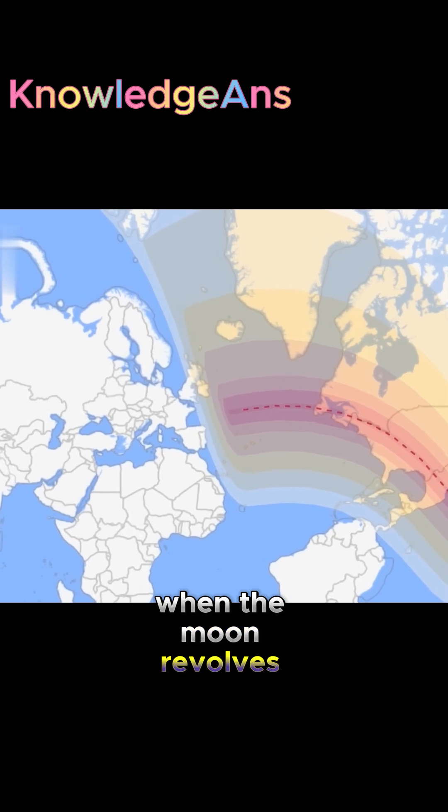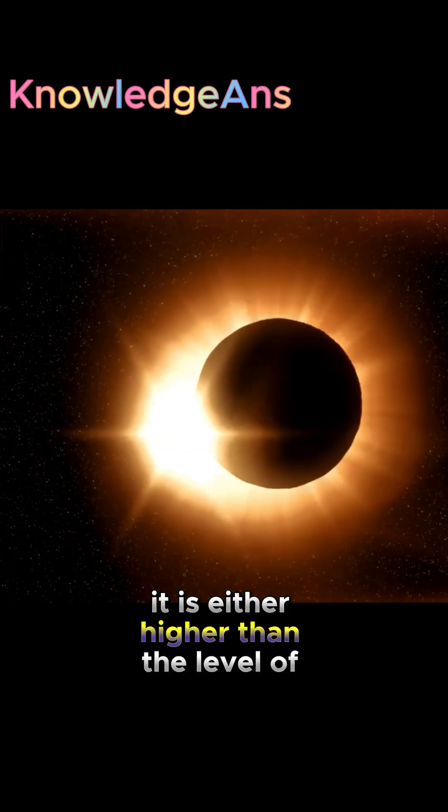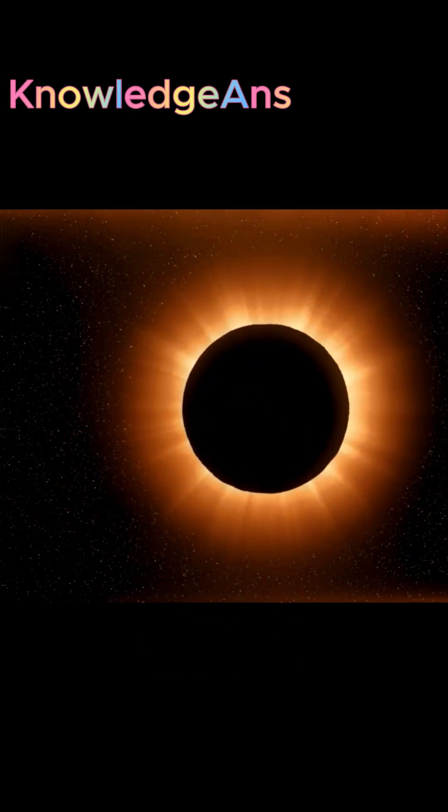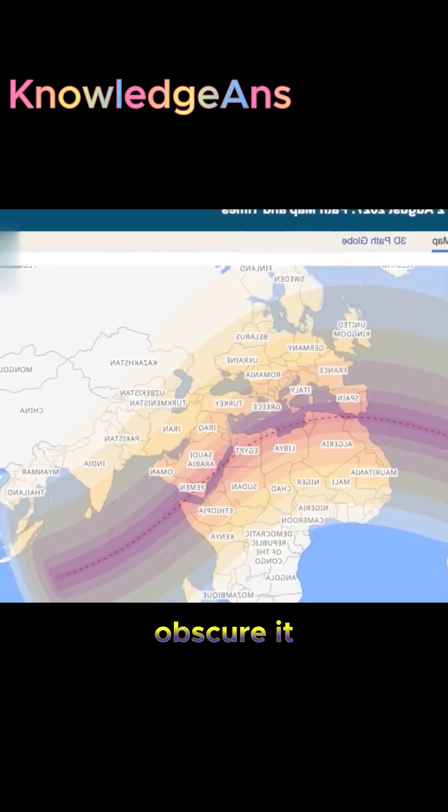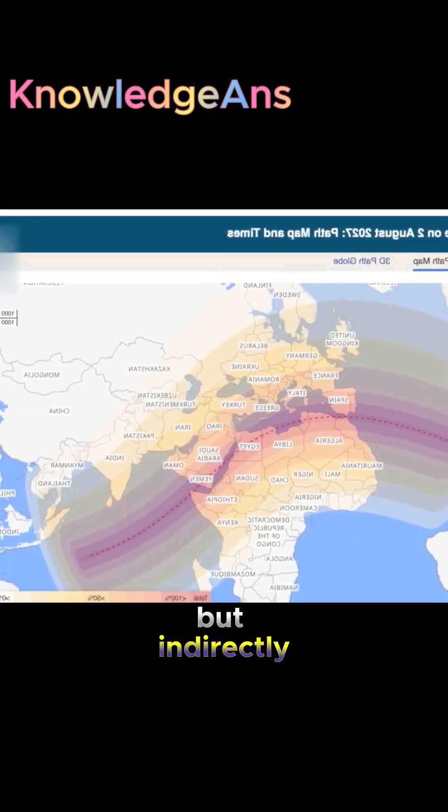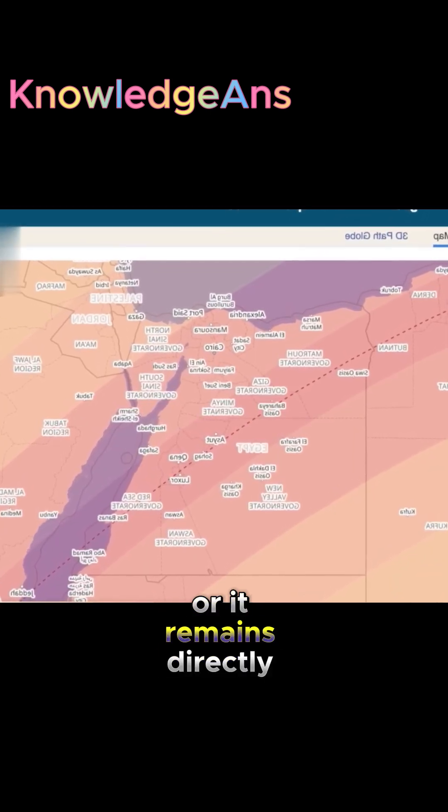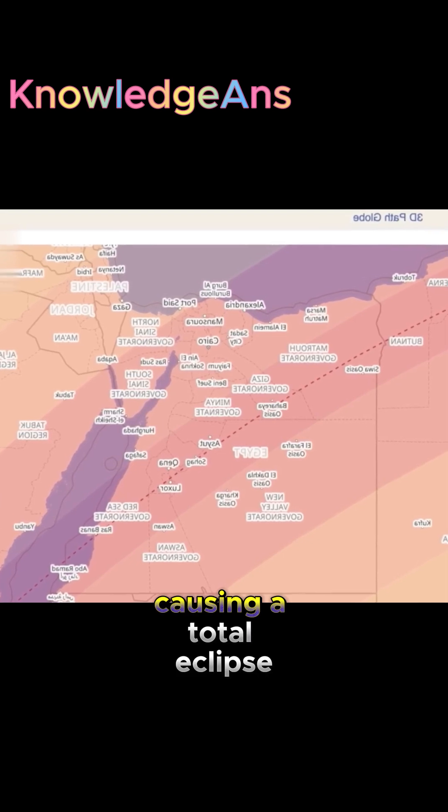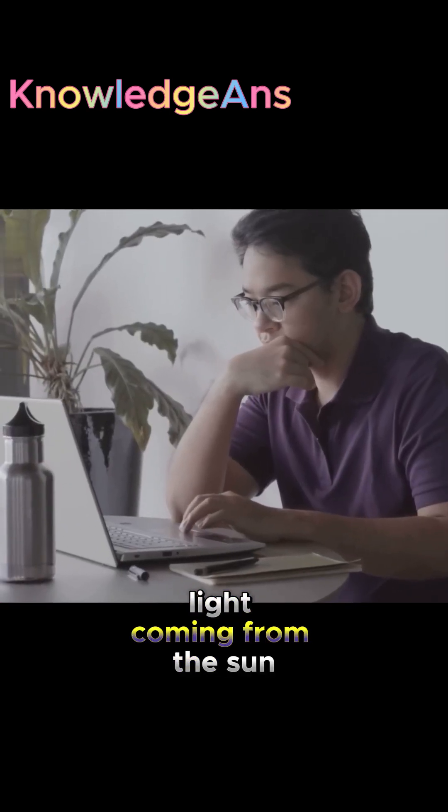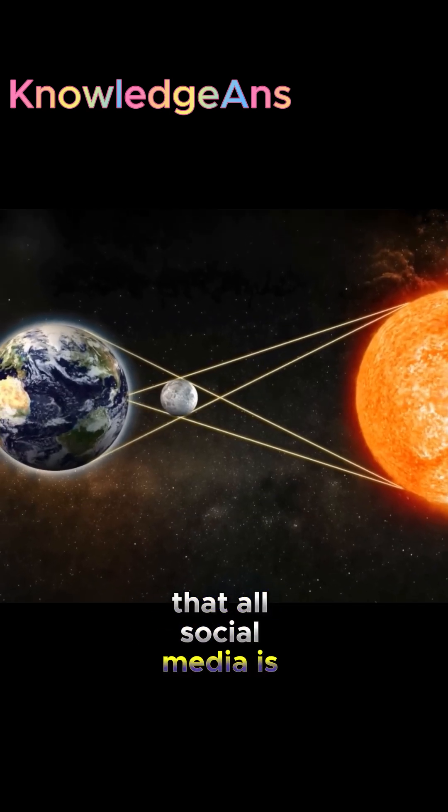For this reason, when the Moon revolves around the Earth, it is either higher than the level of the Sun or lower than the level of the Sun and therefore does not obscure it. When the Moon is facing the Sun but indirectly, a partial eclipse occurs. When it remains directly facing the Sun, a total eclipse occurs, blocking all the light coming from the Sun. This is the eclipse that all social media is talking about.